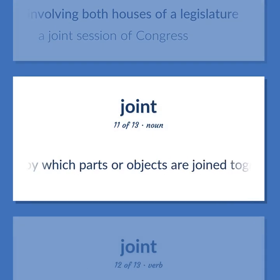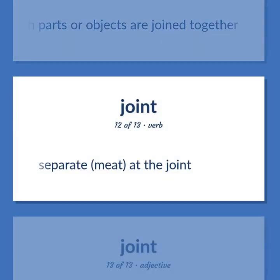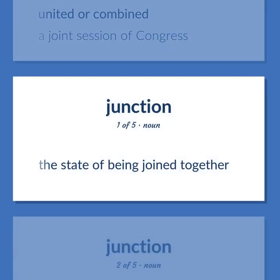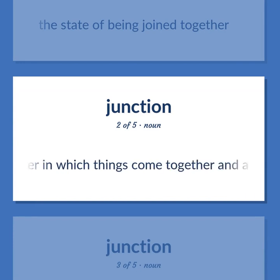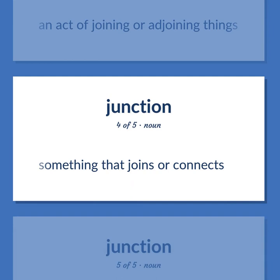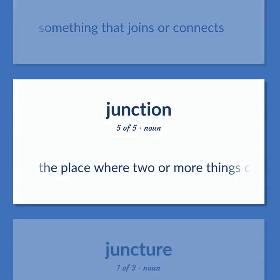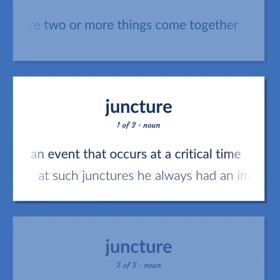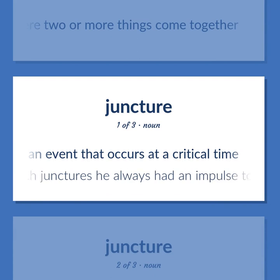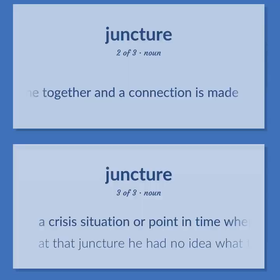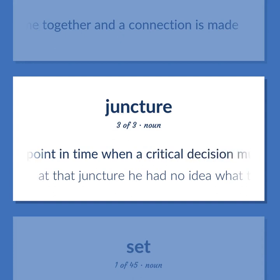Juncture: Junction by which parts or objects are joined together. Separate; meet at the joint. United or combined — a joint session of Congress. The state of being joined together. The shape or manner in which things come together and a connection is made. An act of joining or adjoining things. Something that joins or connects. The place where two or more things come together. An event that occurs at a critical time — at such junctures he always had an impulse to leave. The shape or manner in which things come together and a connection is made.